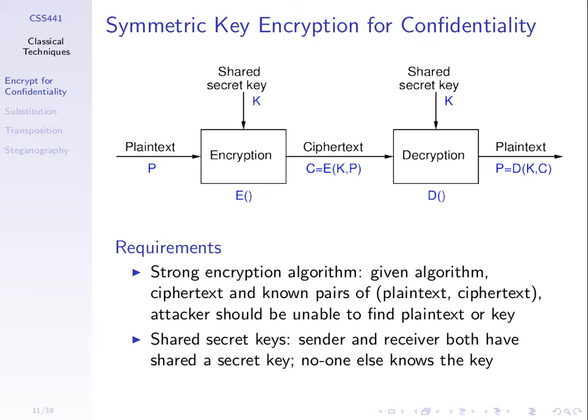For confidentiality using symmetric key encryption, we take the plaintext, apply an encryption algorithm, and the other input is the shared secret key — we get ciphertext as output. That's what we send across our network or save on disk if we want to encrypt a file. To decrypt, you use the same key and apply a decryption algorithm on the ciphertext and you get the original plaintext — the exact same message that the source started with, if the cipher and algorithms are designed correctly.